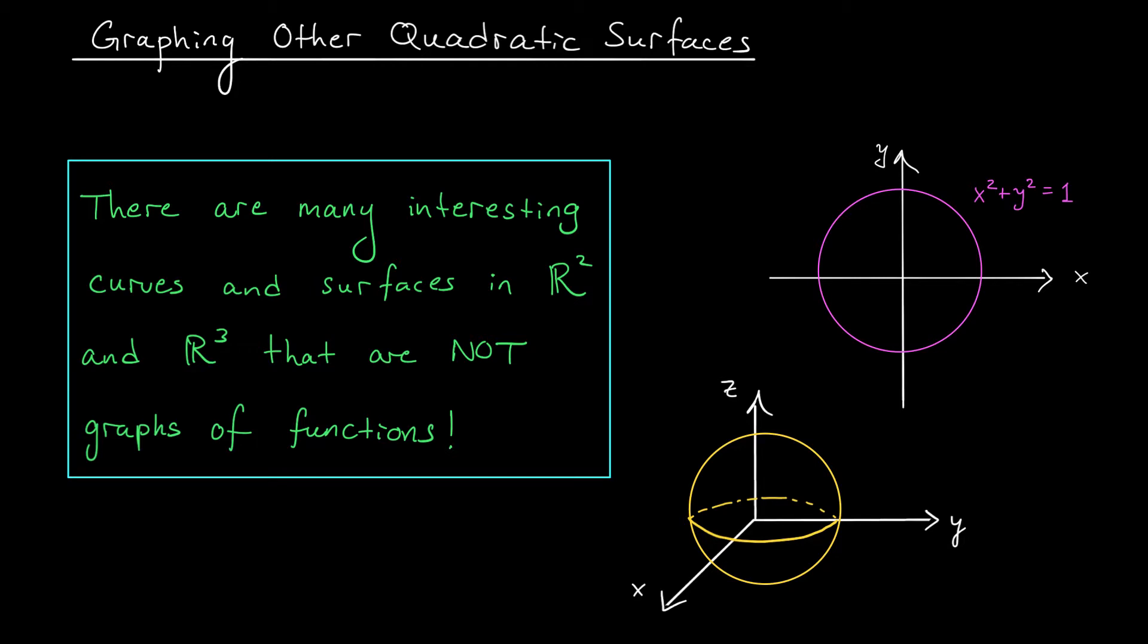It turns out, however, that there are plenty of other surfaces in R³ that don't arise in this way. They're not the graphs of some multivariable function.